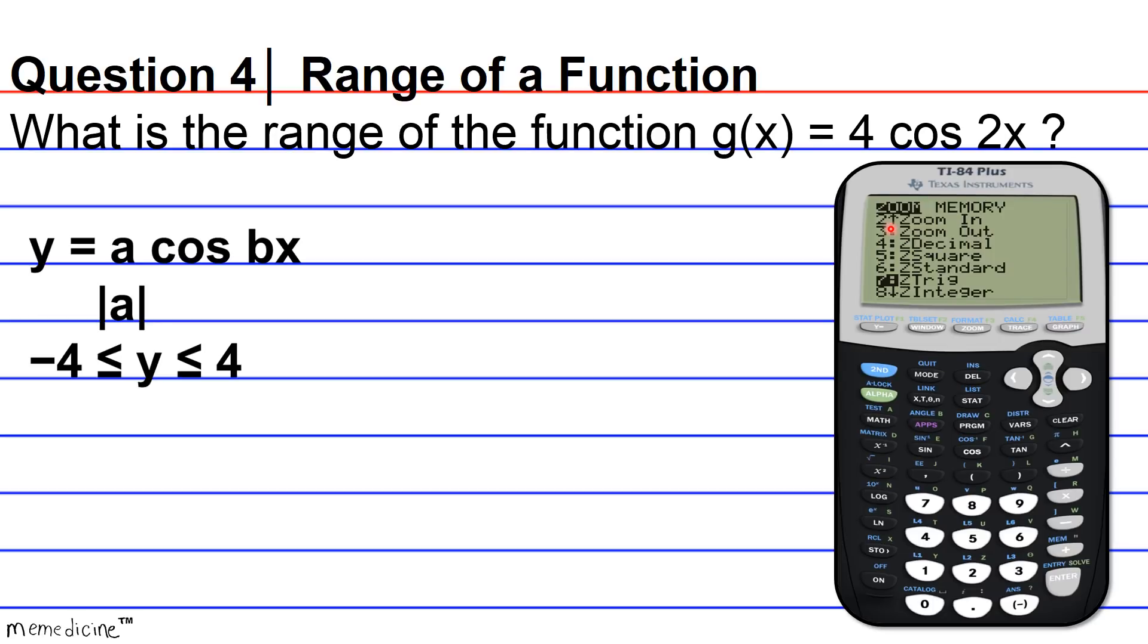And before viewing the visual, I go ahead and hit Zoom. And then I hit 7 to get the Zoom Trig window, because when you Zoom Trig, your calculator does these intricate calculations that makes the screen more accommodating to a trigonometric function. That's why we entered radian mode, right? So now I go ahead and graph.